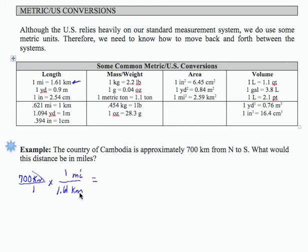So if I want to determine the distance across Cambodia in miles, I can take 700 divided by 1.61, and my units will be in miles. And that division is 434.78 miles.